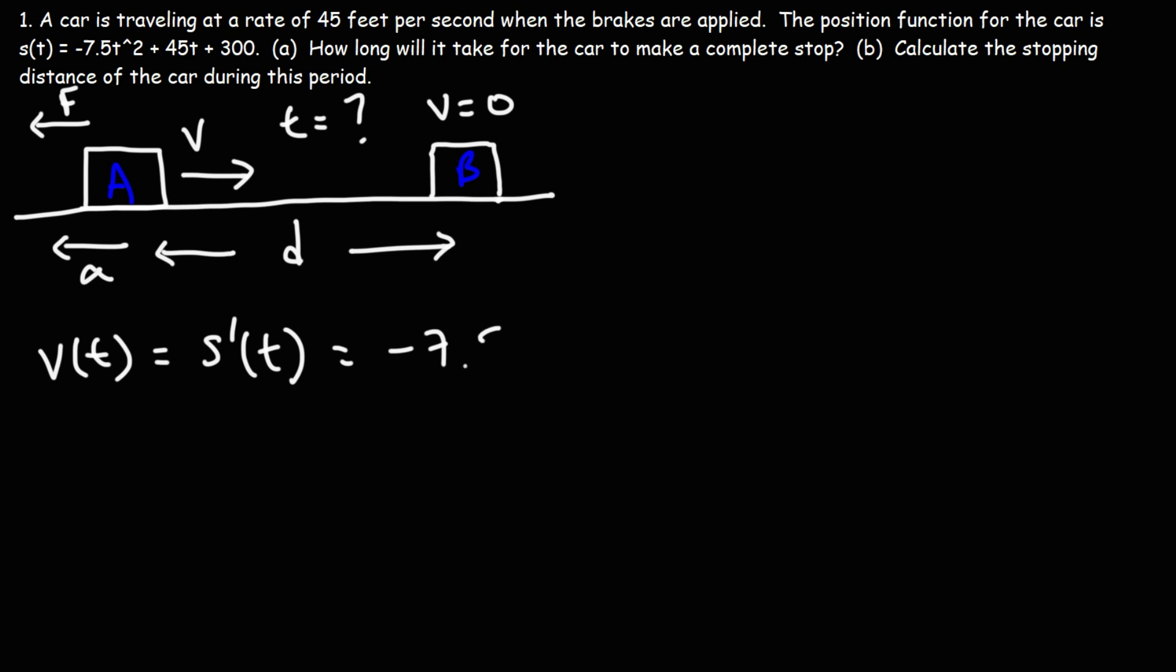The derivative of T squared is 2T. The derivative of 45T, or rather just T, is 1. So the derivative of 45T is simply 45. The derivative of a constant is zero.